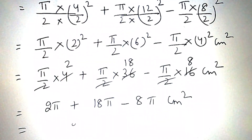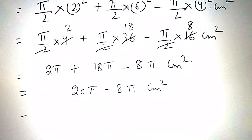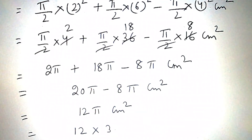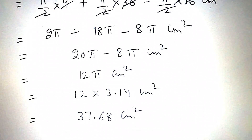This equals 20π minus 8π centimeter square. On subtracting, then we get 12π centimeter square. That is 12 into 3.14 centimeter square. On multiplying, then we get 37.68 centimeter square.